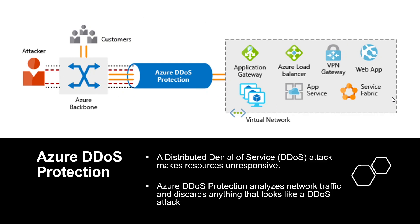Looking at the example diagram, Azure DDoS protection identifies the attacker's attempt to overwhelm the network. It blocks the traffic from the attacker, ensuring that traffic never reaches the Azure resources. Legitimate traffic from customers still flows to Azure without any interruption of service.